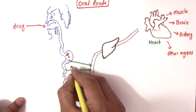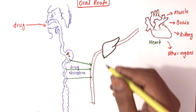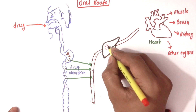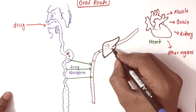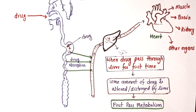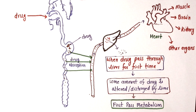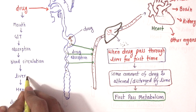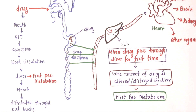The drug is absorbed from the GIT into portal circulation, and from there it goes to the liver. Once it reaches the liver, some portion of the drug will be metabolized — this is called first-pass metabolism, as we discussed in the previous lecture. From there the drug goes to the heart and gets distributed to other organs.